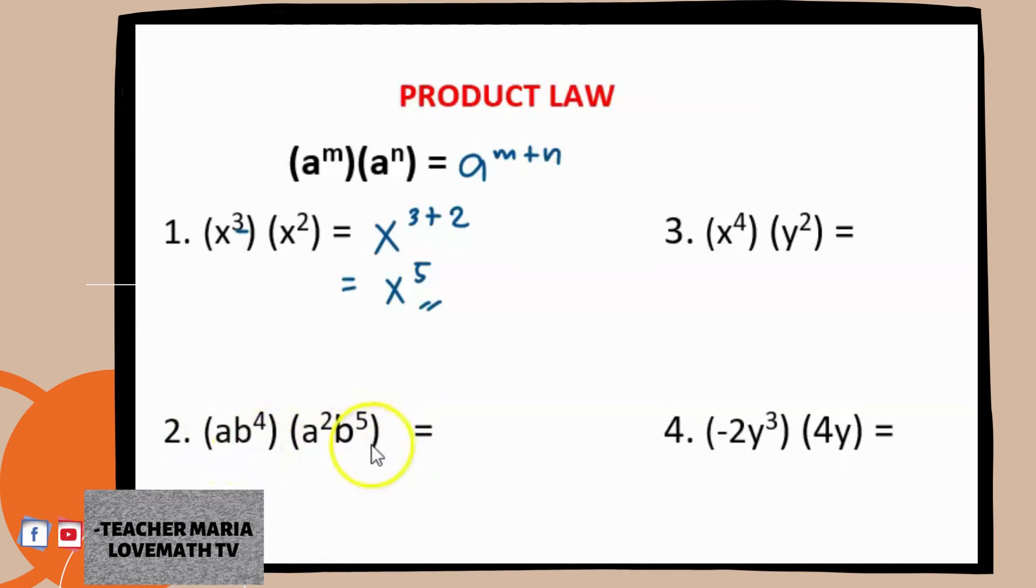Since you have two variables here, we are going to focus first on a. For a, we have here a. The exponent of a here is 1, invisible 1. So you will have here 1 plus the exponent of the second a is 2. And then focus on b. You will have here b raised to 4, so you will have 4, this one, plus 5.